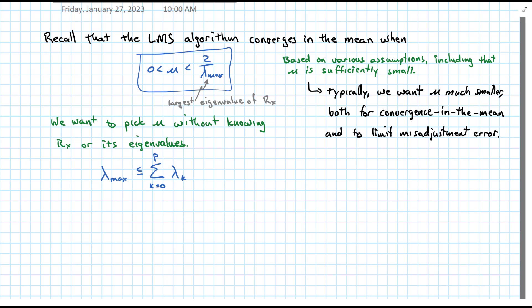Unless it's dimension 1. Well, as we've already mentioned, the sum of the eigenvalues is equal to the trace of Rx. And the trace of Rx is just equal to the sum of the expected value of x squared n minus k.